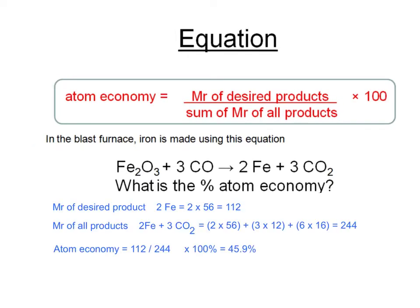To calculate this, we refer back to the equation: atom economy is the MR of the desired products over the sum of the MR of all the products, expressed as a percentage. We work out the MR of the desired product, which is the two Fe's — two lots of the relative atomic mass of Fe, which is 56. Two lots of 56 is 112.